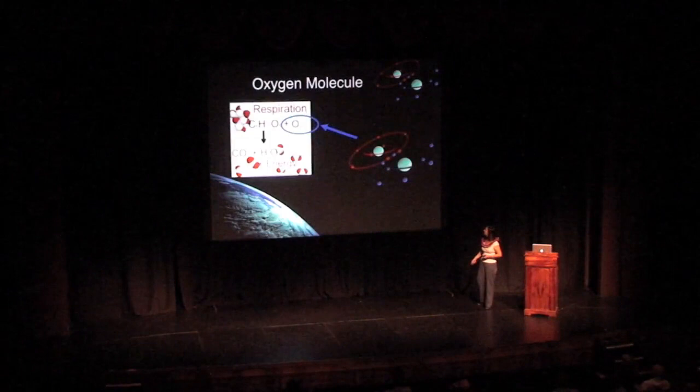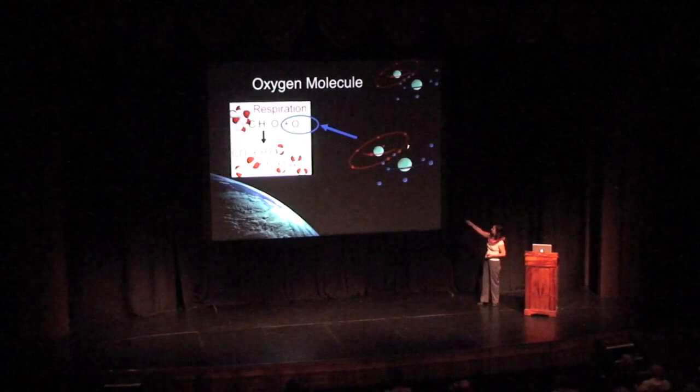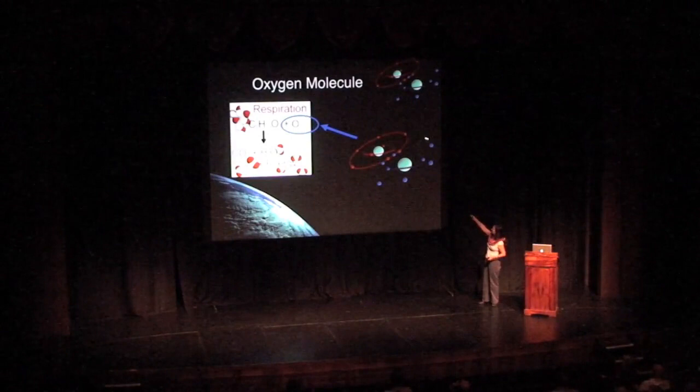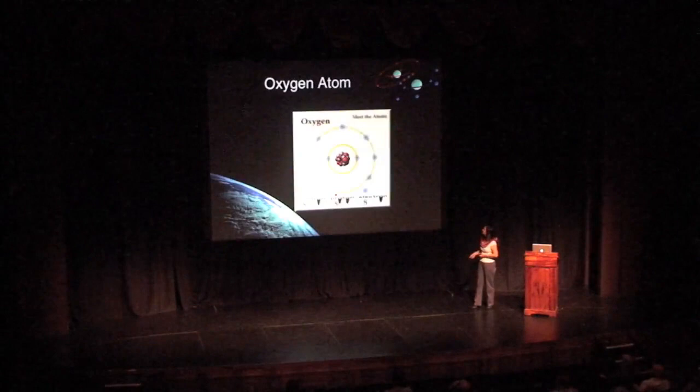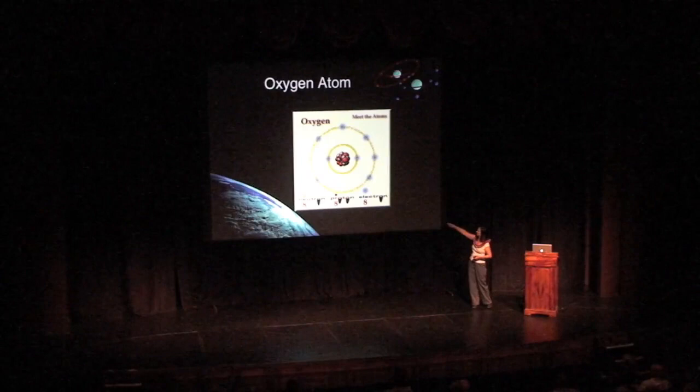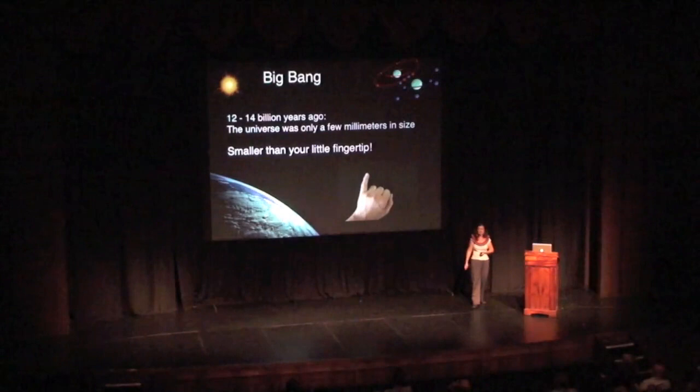The oxygen I'm talking about here is molecular oxygen — two oxygen atoms joined together. But in the universe they're not created this way; they're actually created as single atoms. So we're going to start off with oxygen's creation as single atoms. Oxygen has neutrons and protons in the center and surrounding it eight electrons. We're going to start now with the Big Bang.